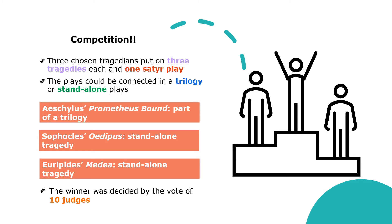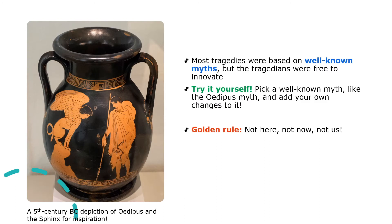During this three-day competition, one thing almost guaranteed to encounter is a story or myth you already know. Most tragedies were based on very well-known myths, but the tragedians were free to innovate — to change a well-known myth subtly or dramatically. So even though the audience might know the story of Oedipus or Medea, they wouldn't be entirely certain how the tragedian was going to change it or which aspect of the myth they would concentrate on.